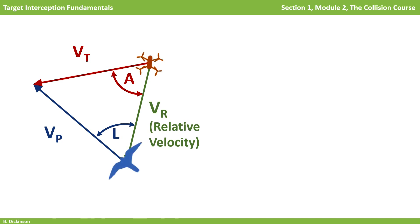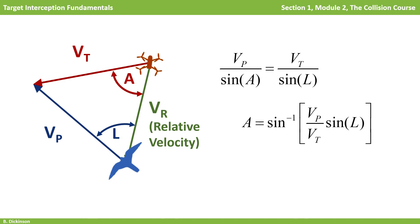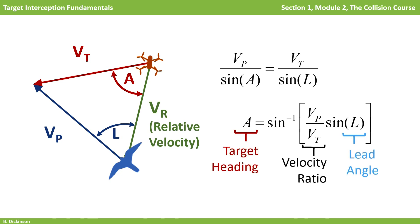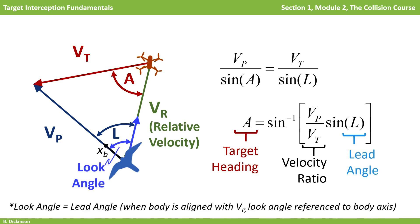You may have seen in the news that falcons have been trained to intercept drones. Let's use them as our pursuer and target in this example, respectively. With this similar collision triangle, from the law of sines we can relate the velocity magnitudes, target heading, and lead angle. Solving for target heading, we get a function of the velocity ratio and lead angle. Also, if the pursuer body is aligned with its velocity vector, then the lead angle also corresponds to the direction of the target in the pursuer's visual field — we'll call this angle the look angle, referenced to the body axis. For continuous target tracking, the eye of the bird or the sensor of the pursuer must have the target within its achievable visual field or field of regard. These visual considerations are important to the achievable collision triangles of the pursuer.